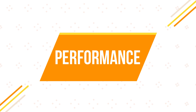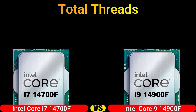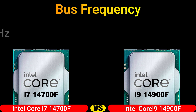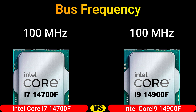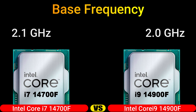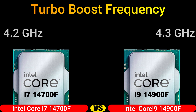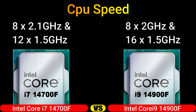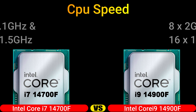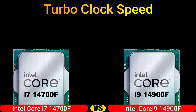Part 2: Performance. Total Cores, Total Threads, Base Frequency, Base Frequency, Turbo Boost Frequency, CPU Speed, Turbo Clock Speed, and Multiplier.